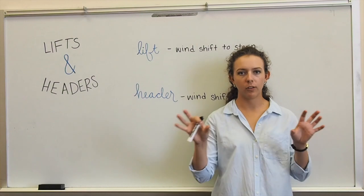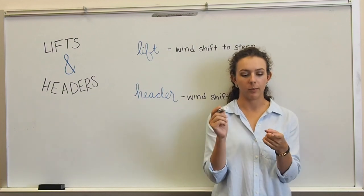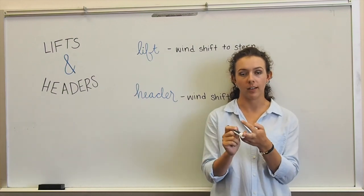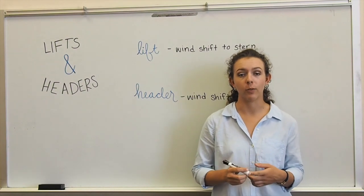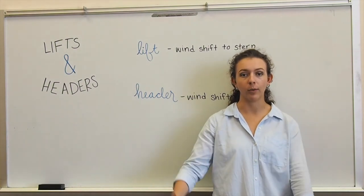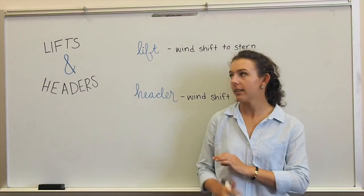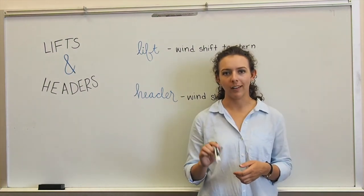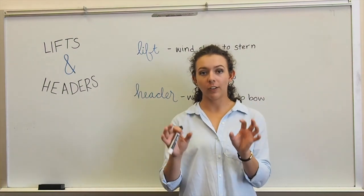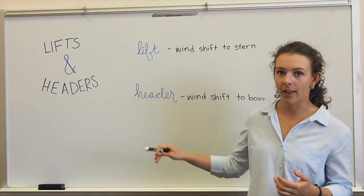When we're sailing we deal with two properties of wind: direction and velocity. Wind velocity changes in the form of puffs and lulls. Puffs are a lot of wind and lulls are less wind. Wind will change direction in the form of shifts, and each shift can either be defined as a lift or a header.